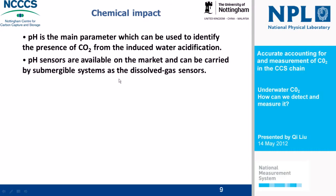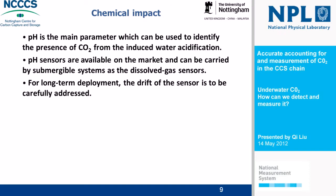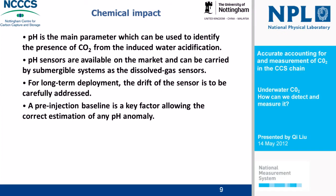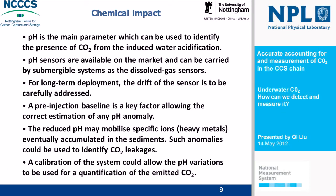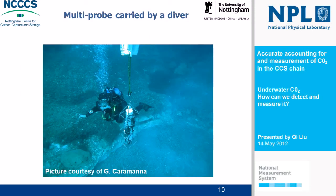For chemical impact, pH is the main parameter which should be used to identify the presence of CO2 from induced water acidification. pH sensors available on the market can be carried by submersible systems, as with dissolved gas sensors. For long-term deployment, sensor drift should be carefully addressed, and a pre-injection baseline is a key factor allowing correct estimation of any pH anomaly. Reduced pH may mobilize specific ions such as heavy metals that eventually accumulate in sediments. Such anomalies could be used for identifying CO2 leakage. This picture shows a multi-probe sensor carried by a diver to measure pH in shallow water.